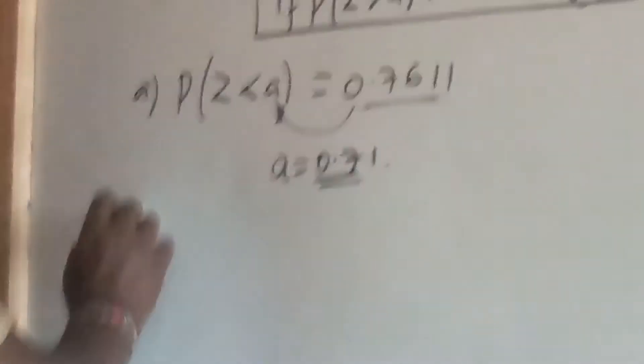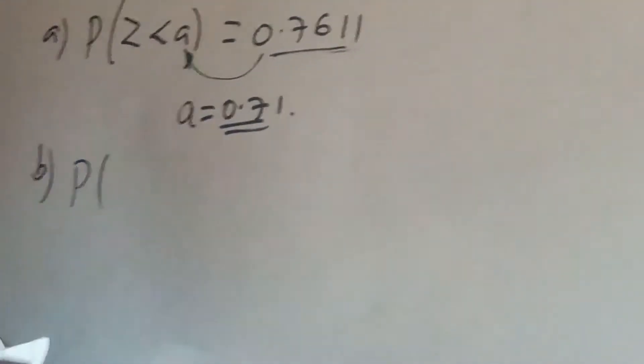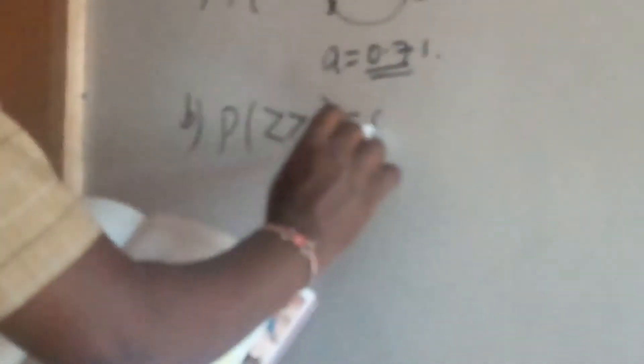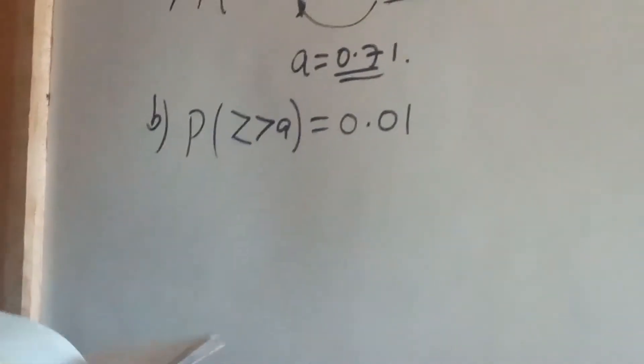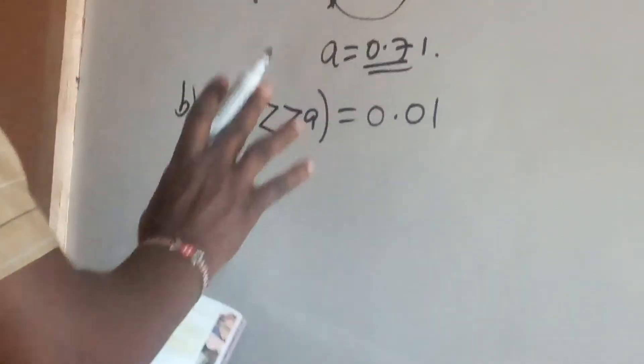Looking at Part B, the probability of Z greater than A is 0.01. There is something to do here. To solve this question, we have two approaches.